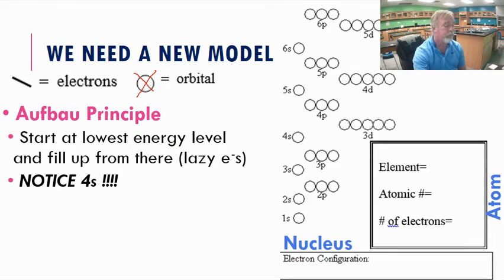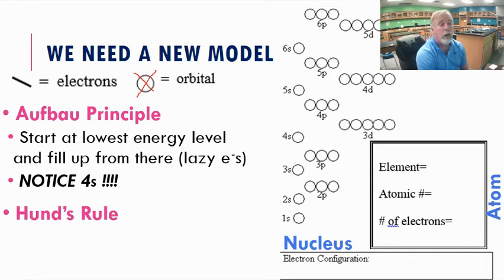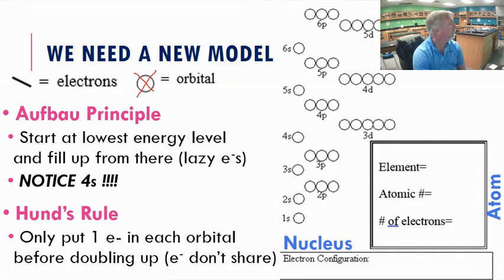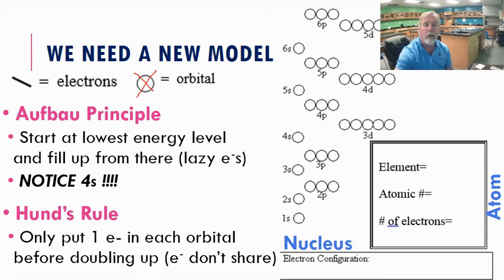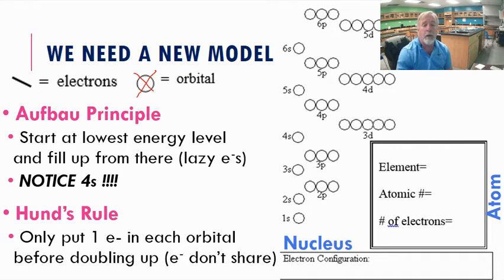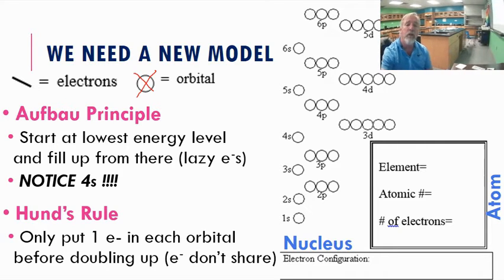There's one more rule: Hund's rule. It tells us we only put one electron in each orbital before we start doubling them up — electrons don't want to share. Like two children with two bedrooms: each one wants their own room before sharing.